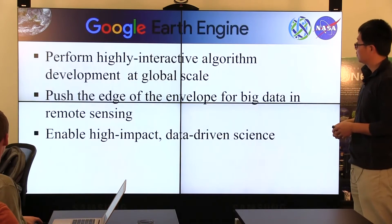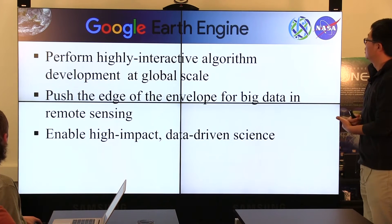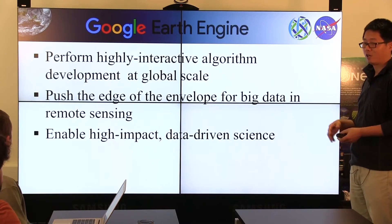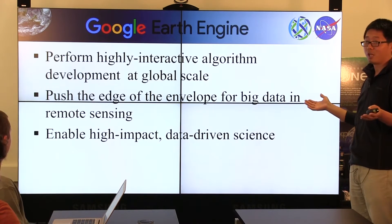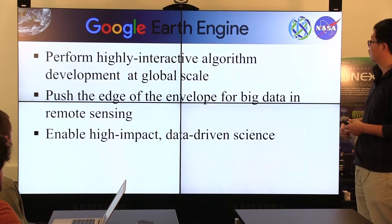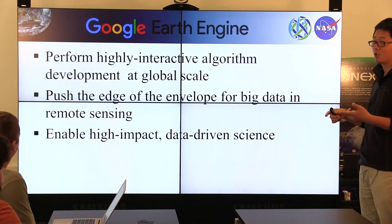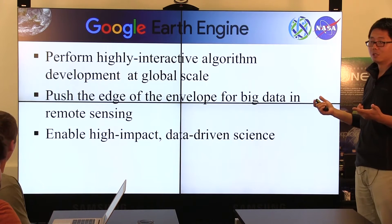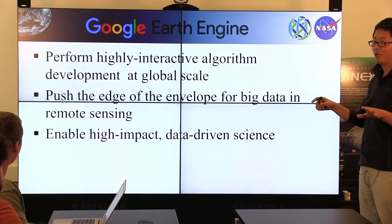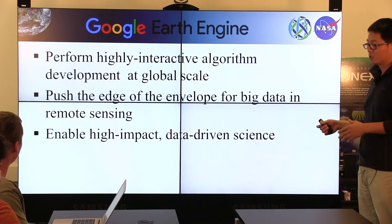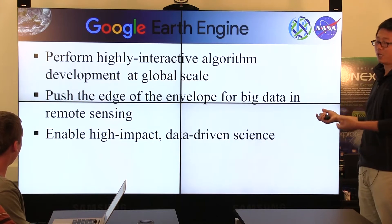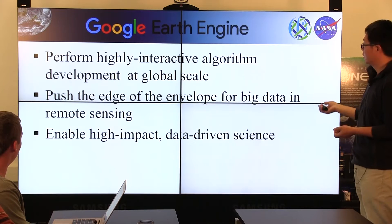Google Earth Engine is a cloud-based platform, and so far it is the most powerful cloud-based platform. It has three key characteristics. The first is the ability to perform highly interactive algorithms developed at global scale. We used to have other cloud-based platforms, but none had this global-scale dataset — including almost all past 40 to 50 years of remote sensing data at global scale saved on this platform. We can use this data for any interesting research.